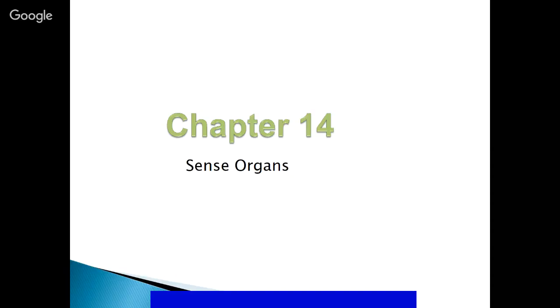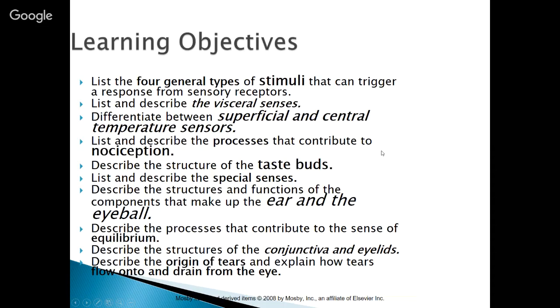This lecture covers chapter 14, which is about sense organs. Our learning objectives today are to list the four general types of stimuli that can trigger a response from the sensory receptors.